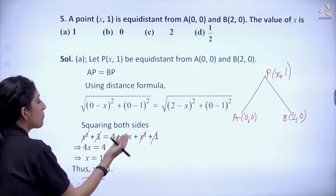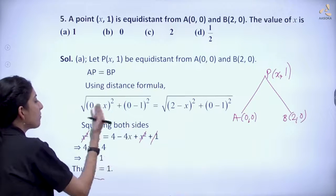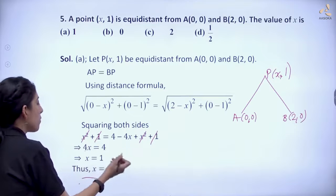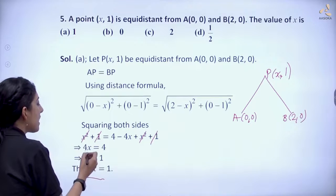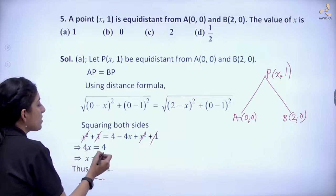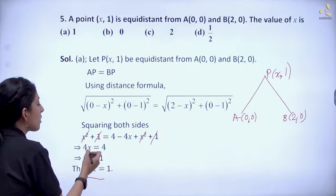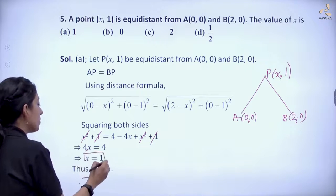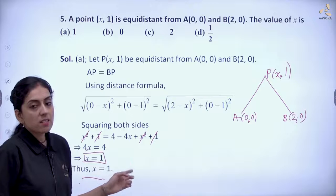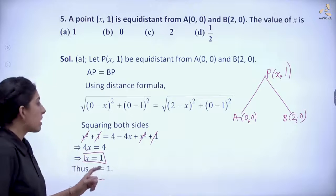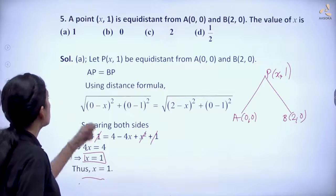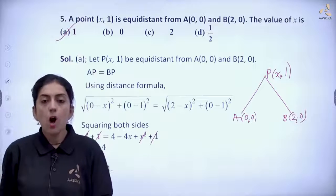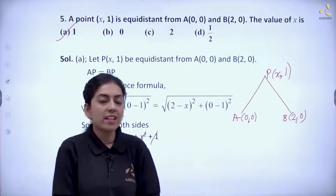Transposing, we get 4x equals 4, so x equals 1. Thus x is equal to 1, and option A is the correct answer. Thank you.